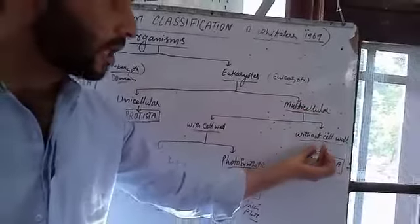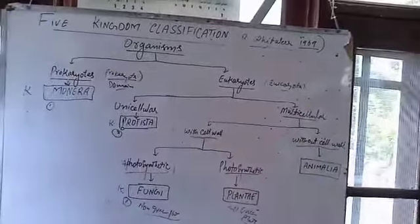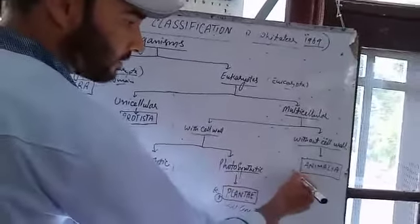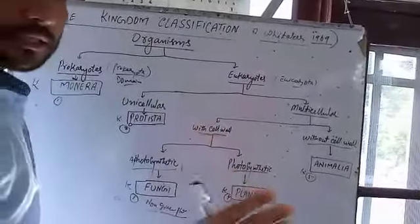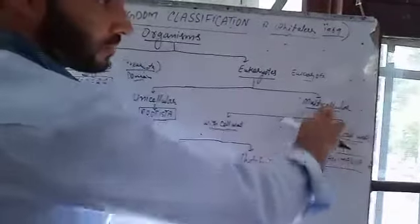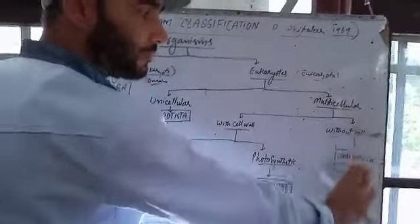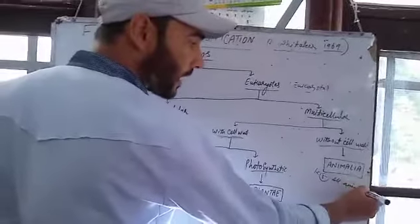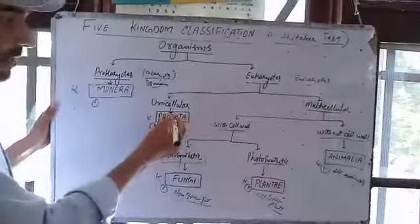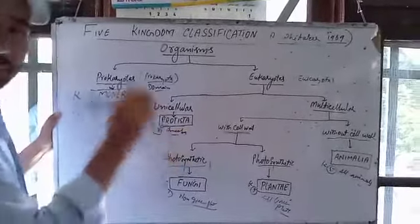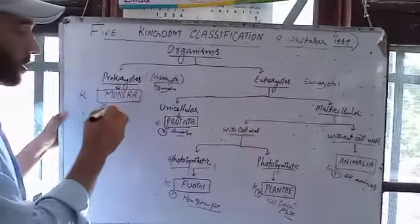Under the multicellular heading, organisms without a cell wall form the fifth kingdom — Kingdom Animalia. All animals are multicellular and do not have a cell wall. Examples in Protista include Amoeba and Paramecium. Kingdom Monera includes all bacteria.